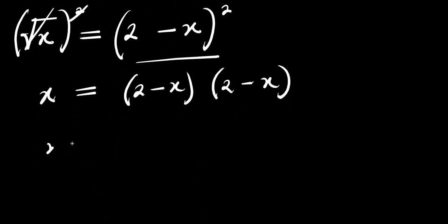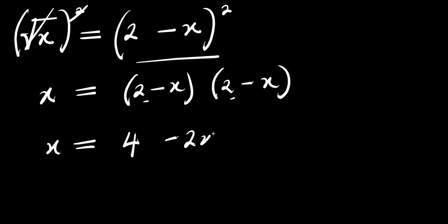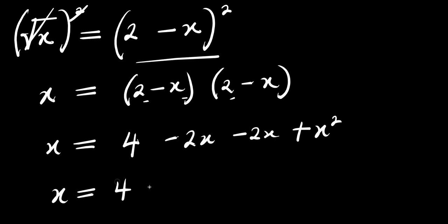So what I can do here: I have x equals — let's expand this — 2 times 2 is 4, 2 times minus x is minus 2x, minus x times 2 is minus 2x, and minus x times minus x is plus x squared. So from here I have x equals 4 minus 4x plus x squared.